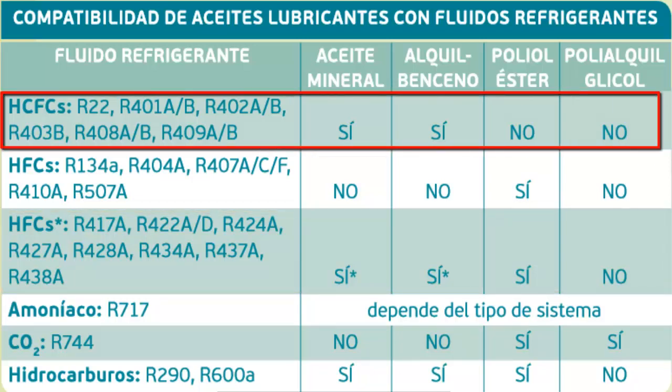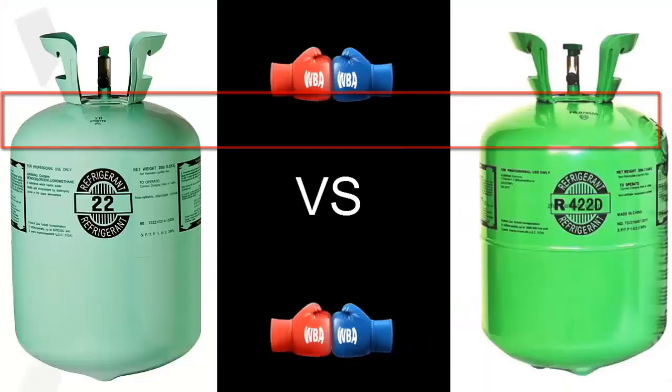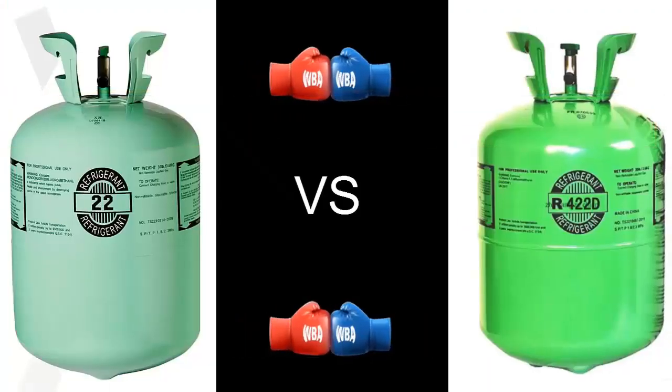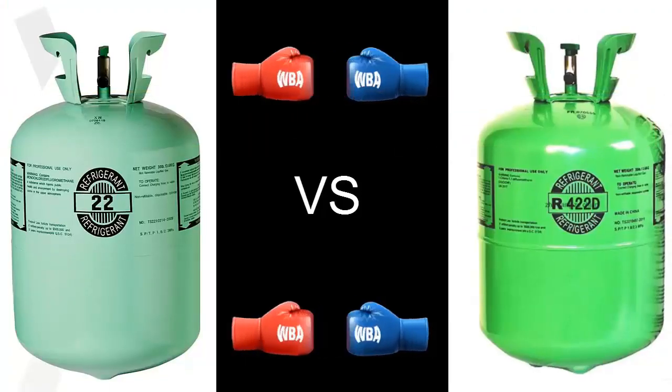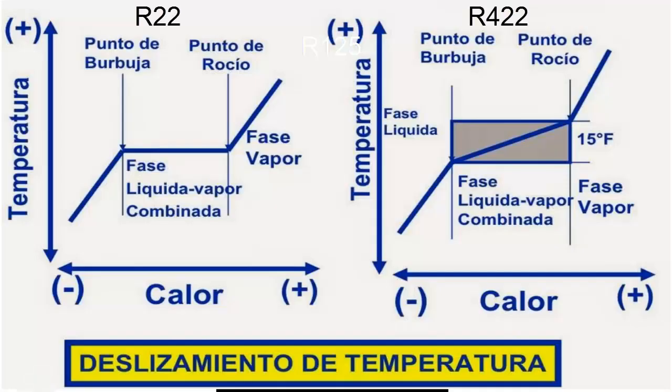However, gases in the R422 family generally have a high temperature glide, meaning their temperature changes during evaporation and condensation.